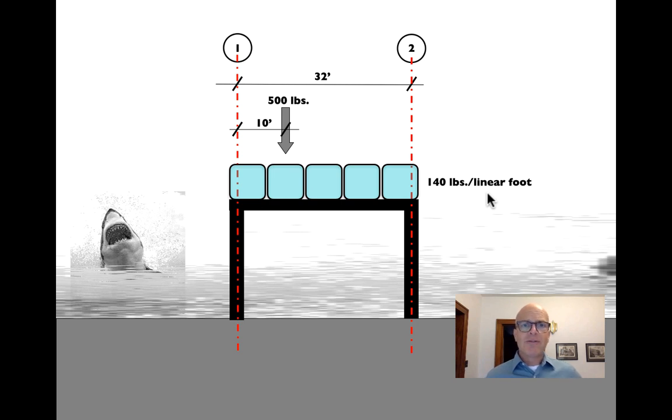In this case, we have our 500 pound load on the pier above the Hungry Shark. We have barrels of water, shark chum, whatever, that are spread out across the pier. In that case, we call this a distributed load. It's something that takes up actual space.